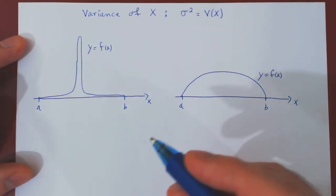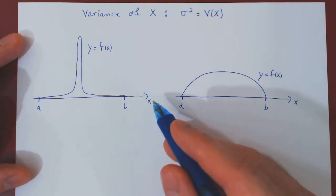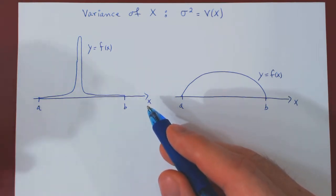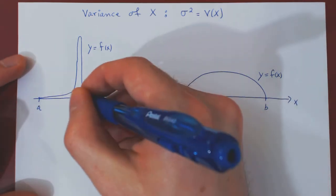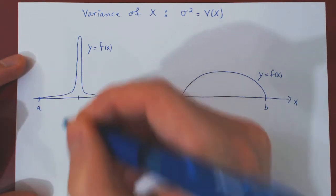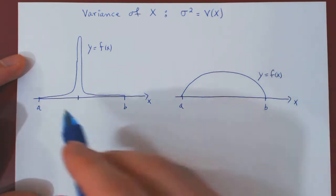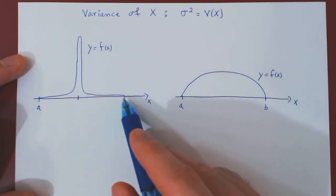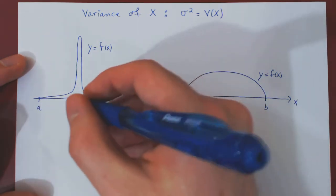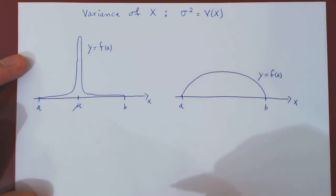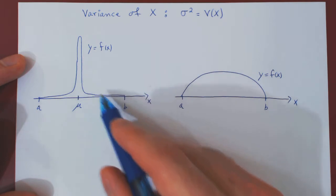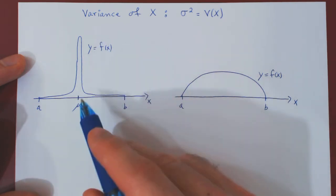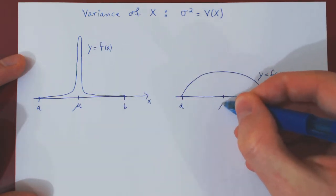Now, as the mean μ is the average value of the random variable, essentially the center of the distribution, in both cases it should be easy to guess where the average value would lie between A and B. In this case, assuming we have a perfectly symmetric density function, μ would be here; in this case, μ would be here.